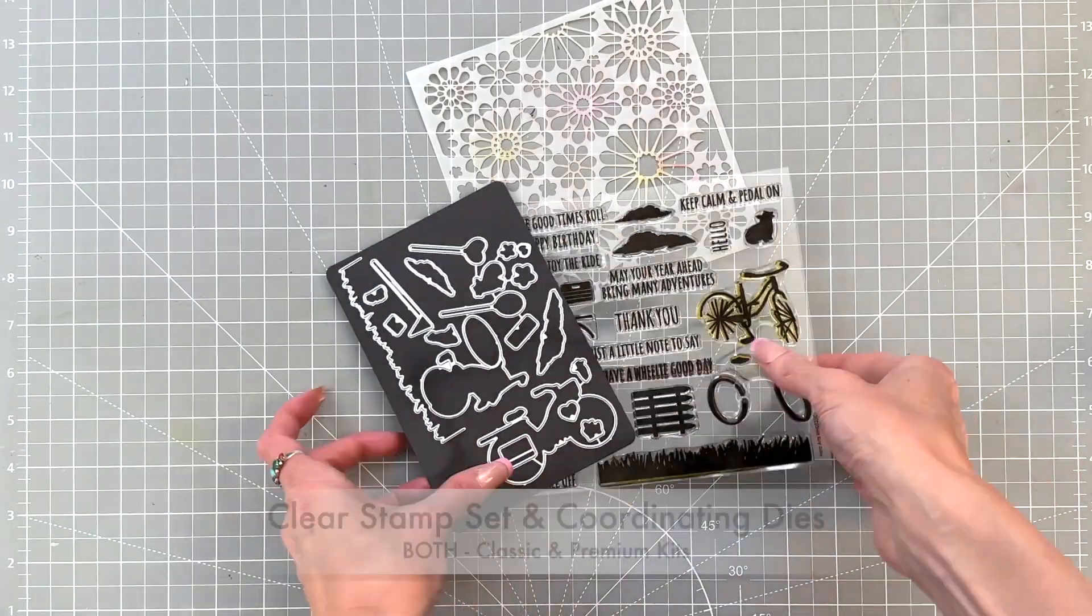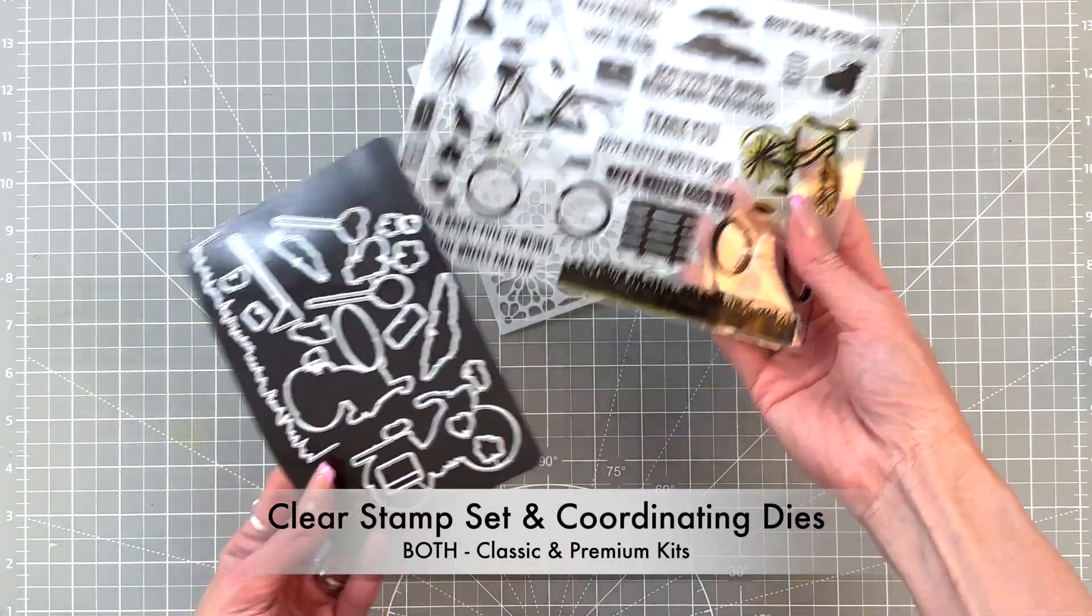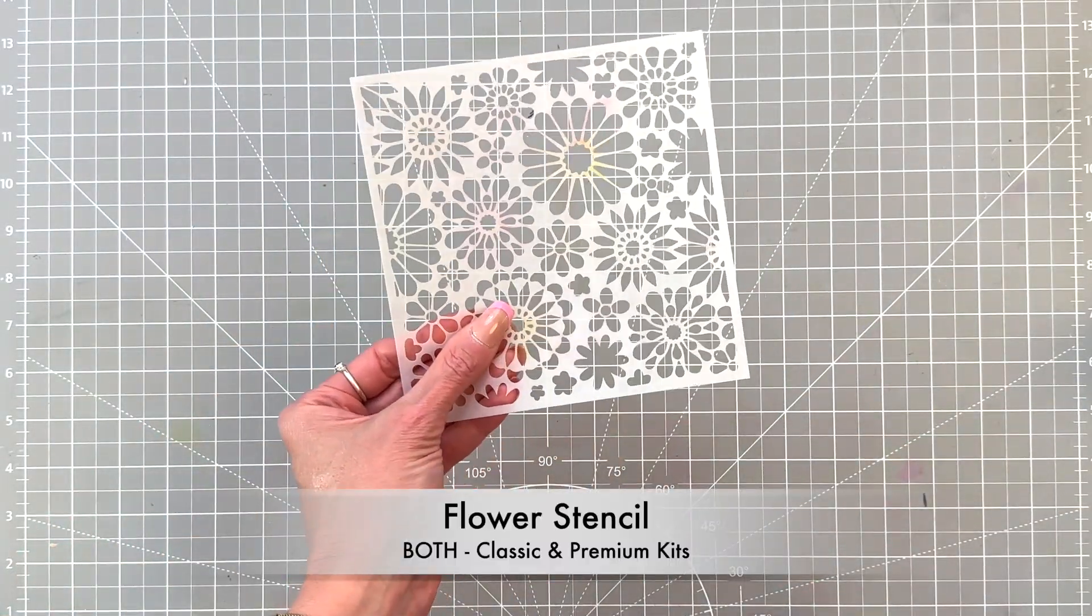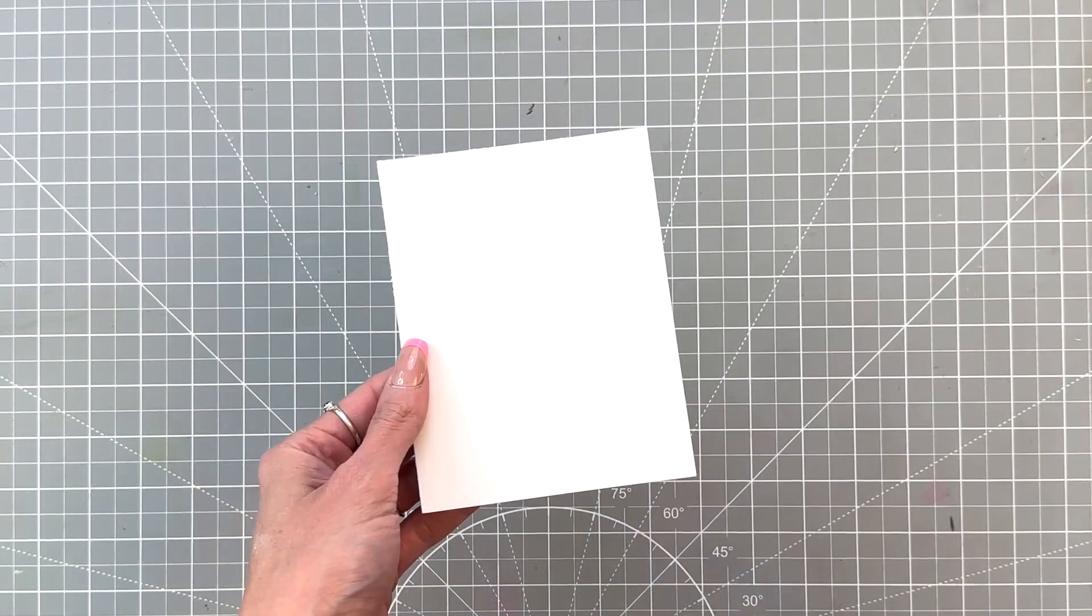Next up are these coordinating stamp and dies that are part of the classic and premium, as well as that flower stencil. We're going to use the stamp set for our sentiment and the bike on the bonus card.